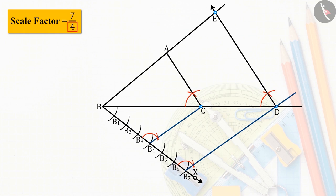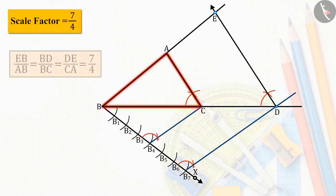From which we get the desired triangle EBD, whose sides are 7 upon 4 times the corresponding sides of the given triangle ABC.